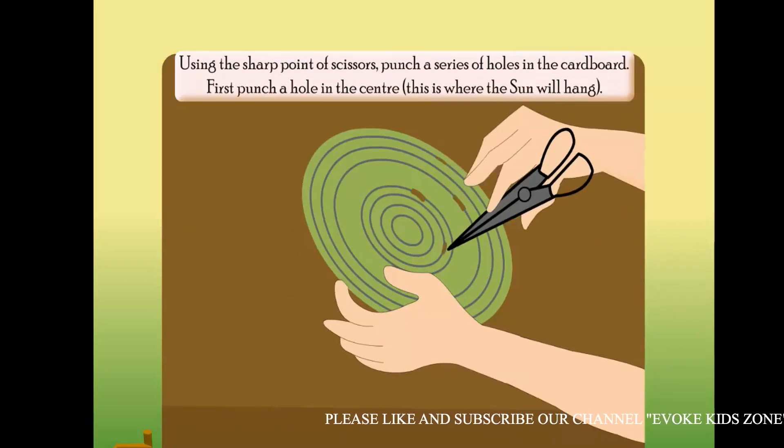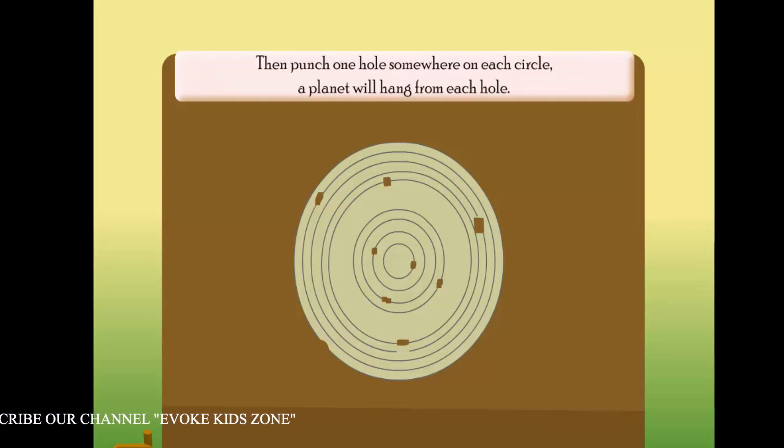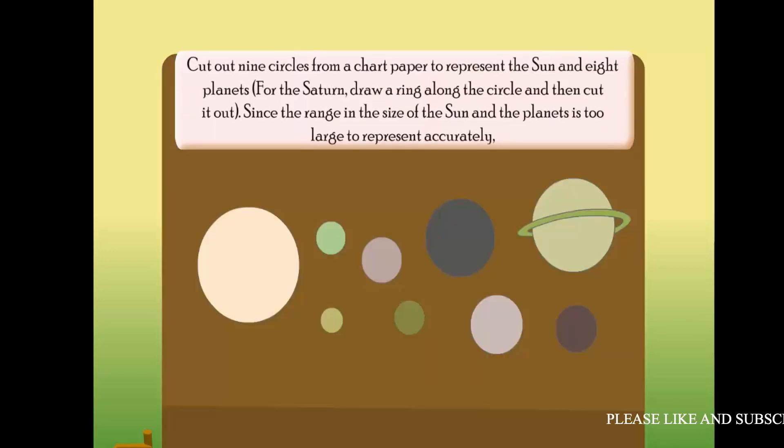First, punch a hole in the center; this is where the Sun will hang. Then punch one hole somewhere on each circle. A planet will hang from each hole.